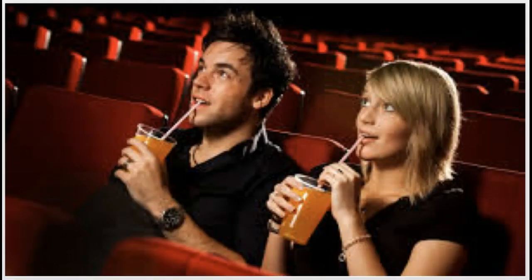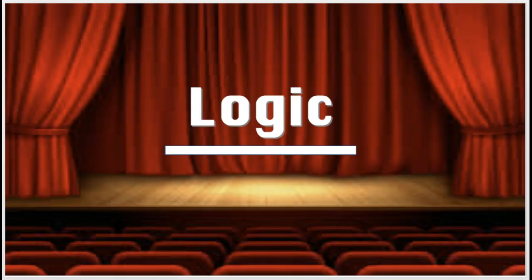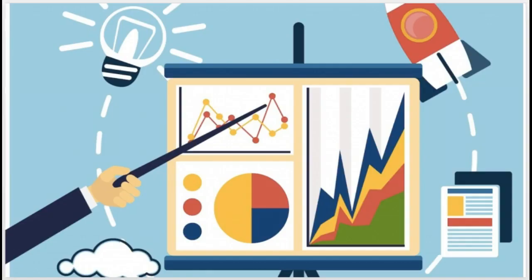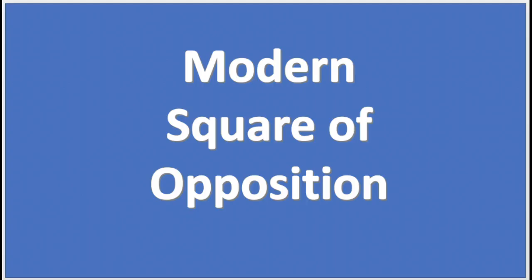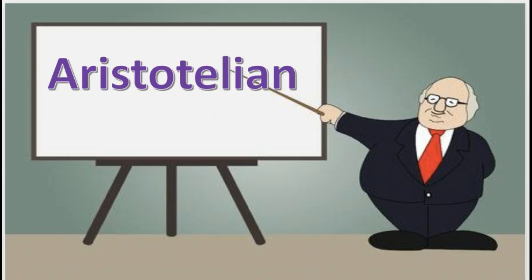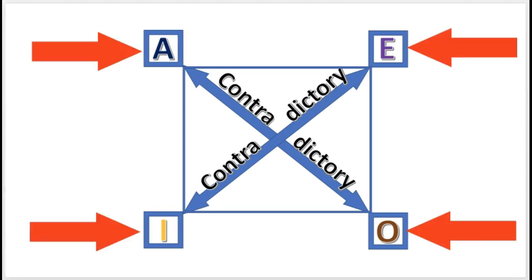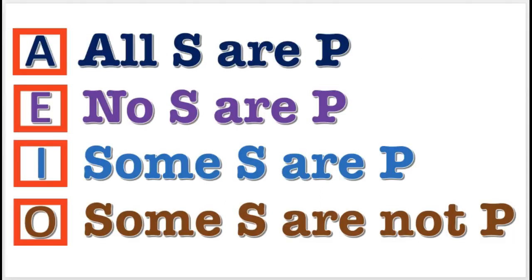Ladies and gentlemen, welcome back to logic. The traditional square of opposition is the topic of this video. The modern square of opposition is extended here to the Aristotelian standpoint. Here is the square of opposition. These letters represent the four categorical propositions.